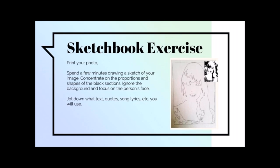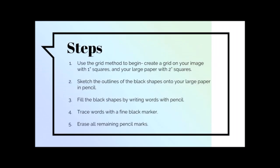After that, spend a few minutes in your sketchbook quickly sketching the main outlines of your image — concentrate on the proportions and shapes of the black sections of your photograph. Once you have your sketchbook exercise done and your photo printed, grab a piece of large Bristol paper. The first thing you'll do is draw a grid on both your image and your drawing paper — one inch squares on your photograph and two inch squares on the large paper.